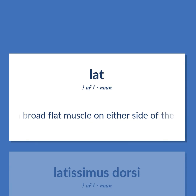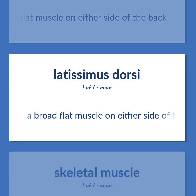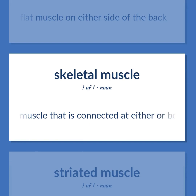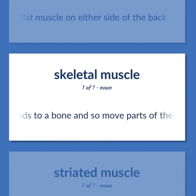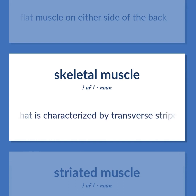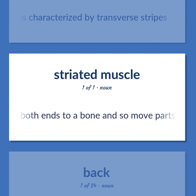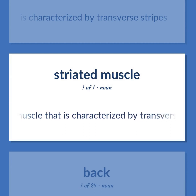A broad flat muscle on either side of the back. A muscle that is connected at either or both ends to a bone and so moves parts of the skeleton. A muscle that is characterized by transverse stripes.